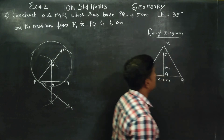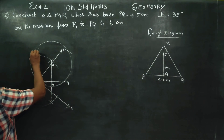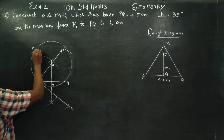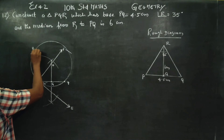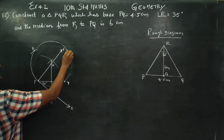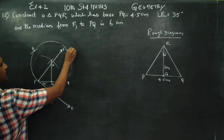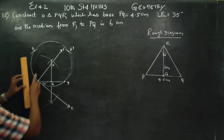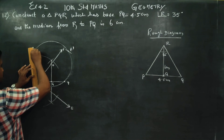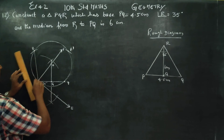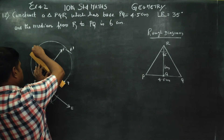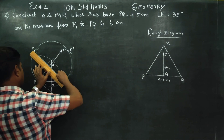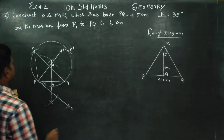The two arcs intersect to give point R and point R dash. In a public exam, join the intersection points. Join to get the triangle by connecting the points.